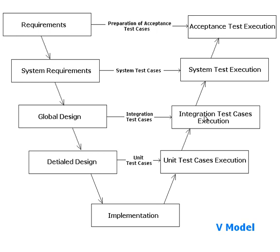In the implementation phase, all the coding takes place. We execute the test cases after that. Test cases are integrated after they pass through unit test execution. Integrated test cases are then added into system test cases, and the whole system is executed for functionality. After that, user acceptance tests, beta tests, and alpha tests are prepared. Each phase has its own testing phase, with verification and validation carried out from requirements through to user acceptance.